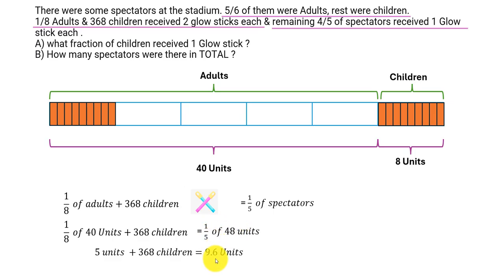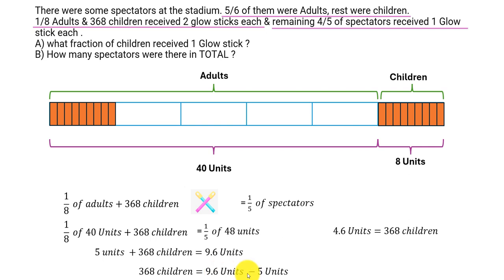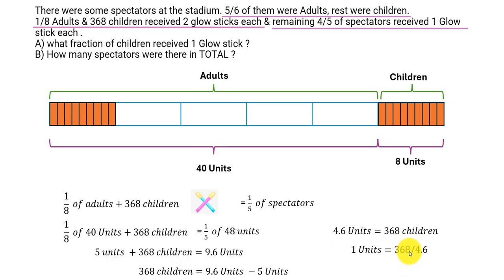So 48 divided by 5 equals 9.6. In this case, 368 children equals 9.6 units minus 5 units. That is 4.6 units equals 368 children. So one unit equals 368 divided by 4.6. To make it easier, multiply both numerator and denominator by 10, giving 3680 divided by 46, which means one unit equals 80 people.